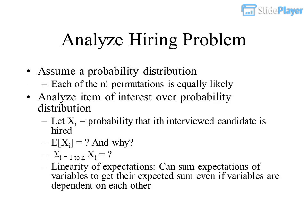Assume each of the N permutations is equally likely. Let Xi equal the probability that the i-th interviewed candidate is hired. Then E[Xi] equals a given value, and the total expected hires equals the sum from i equals 1 to N of Xi. By linearity of expectations, we can sum expectations of variables to get their expected sum, even if variables are dependent on each other.